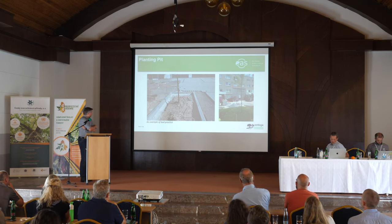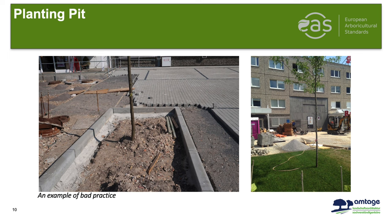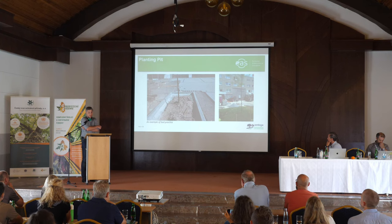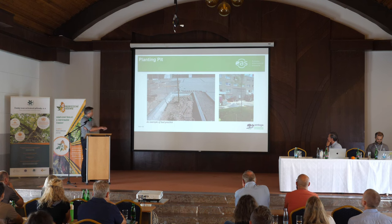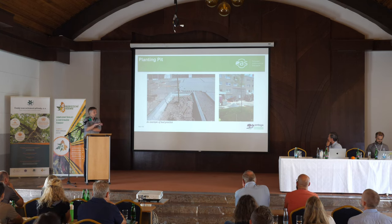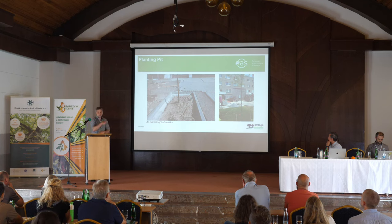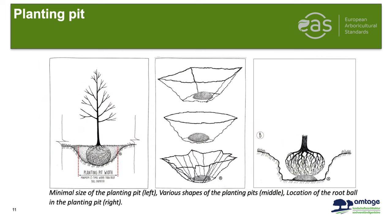Here is an example of bad practice — you can see the tree is planted into a poor substrate, planted far too deep, with future drainage and irrigation problems. Then you see it is covered with turf — hiding the problems. Sometimes you cannot see the issues at all. Also shown here are standard minimum sizes for planting pits and the correct location of the root ball within the planting pit.